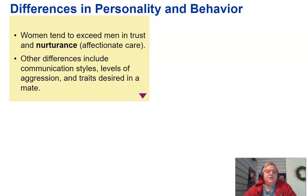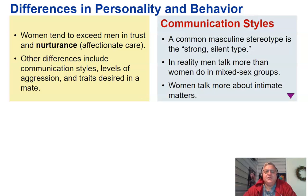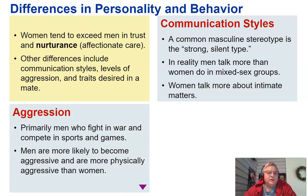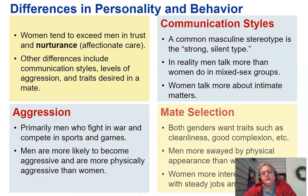Women tend to exceed men in trust, nurturance, and affectionate care. Other differences include communication styles, levels of aggression, and traits desired in a mate. Regarding communication, a common masculine stereotype is the strong silent type; in reality, men talk more than women in mixed-sex groups, while women talk more about intimate matters. Men are more likely to become aggressive and more physically aggressive than women. In mate selection, both genders want traits such as cleanliness and good complexion, but men are more swayed by physical appearance, while women are more interested in men with steady jobs and dependability.